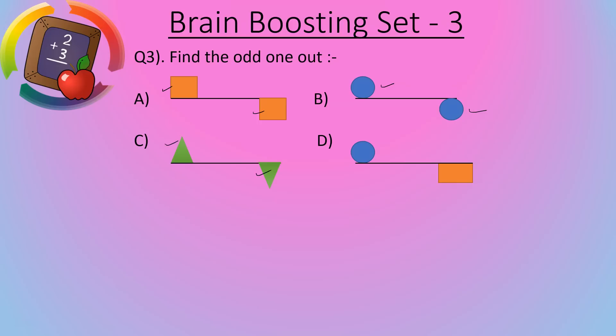Option D, one circle and one rectangle. No. Because here both are not the same. In this option, both objects are not the same. So our answer is option D. Option D is our answer.